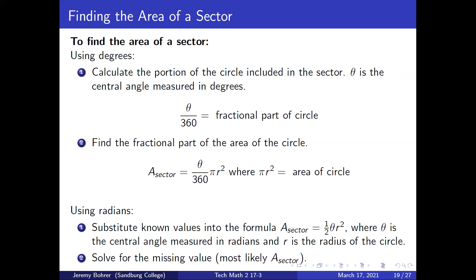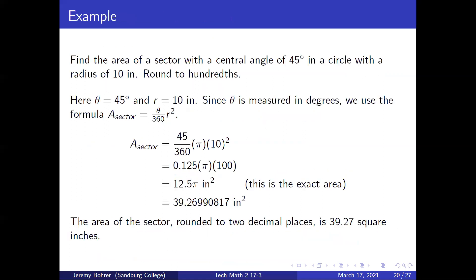Using radians, substitute known values into the formula. The area of the sector is equal to one half theta r squared, where theta is the central angle measured in radians and r is the radius of the circle. Then solve for the missing value, most likely the area of the sector.